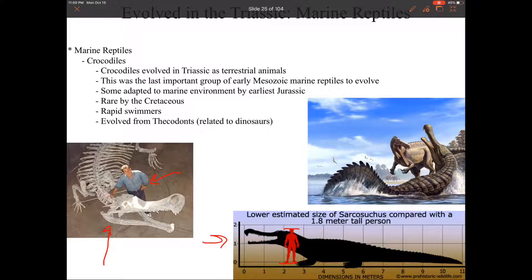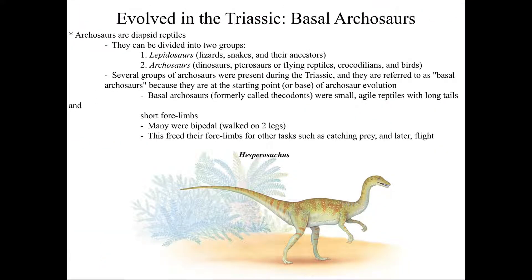I'm very glad they don't get to that size today. So for our reptiles we're going to have this group called archosaurs. Archosaurs can be divided into two groups: our lepidosaurs, which are all of our lizards and snakes and modern guys, and then our archosaurs, which are dinosaurs, pterosaurs, crocodiles, and birds. Some archosaurs are around in the Triassic, but we call those basal archosaurs because they're kind of the base of this group, and then everything kind of evolves from this point.